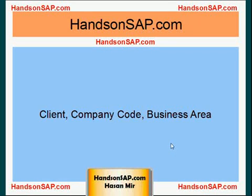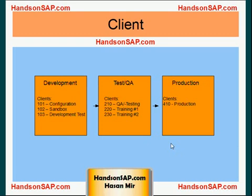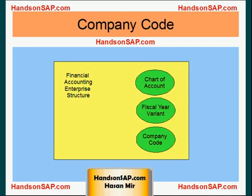Hello, welcome to HandsOnSAP.com. This is Hassan Mir. In this tutorial, I'm going to talk about the differences between client, company code, and business area. We have talked about client before. You have SAP installations, and within each SAP installation, you can create multiple clients so that you can use each client for different purposes. We also talked about the financial accounting enterprise structure, and all modules depend on this structure. Company code is an element within this structure.